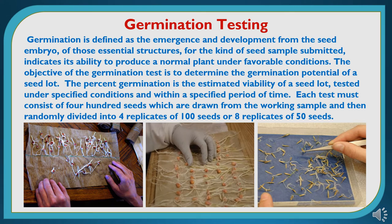Germination testing is very important for the certification of germination status of a seed lot. Germination is defined as the emergence and development from the seed embryo of those essential structures for the kind of seed sample submitted, which indicates its ability to produce a normal plant under favorable conditions. The objective of the germination test is to determine the germination potential of a seed lot. Each test must consist of 400 seeds drawn from the working sample, randomly divided into four replicates of 100 seeds or eight replicates of 50 seeds.